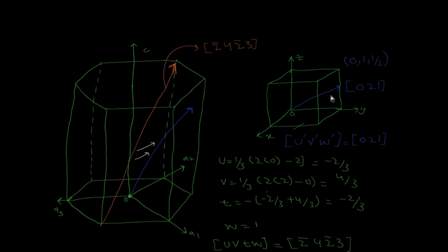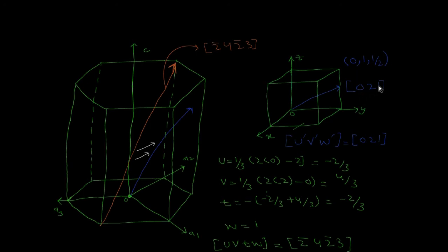Drawing this direction in the three-dimensional system with x, y, and z axes, the line starts from origin O and cuts the side at the half. The coordinates are: 0 along the x-axis, 1 along the y-axis, and 1/2 along the z-axis. To clear fractions we double these, giving u' = 0, v' = 2, w' = 1.